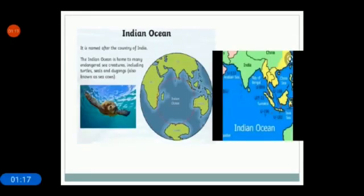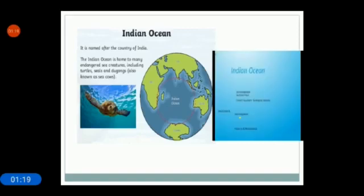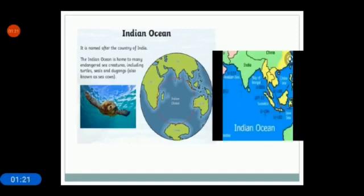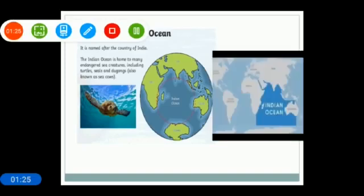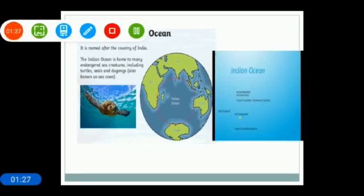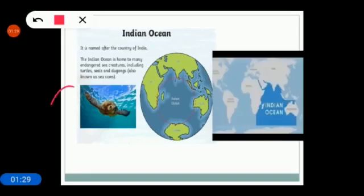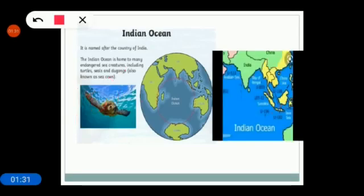Next is Indian Ocean. It is named after the country of India. The Indian Ocean is home to many endangered sea creatures including turtles, seas, dugong, also known as sea cows. You know that it covers 20% of the earth's surface.